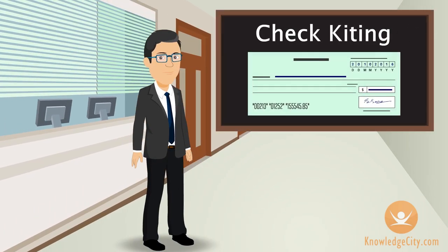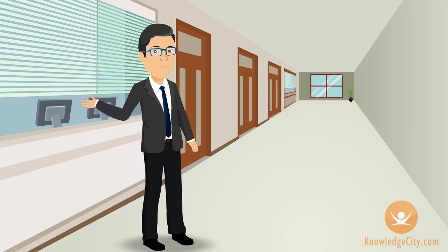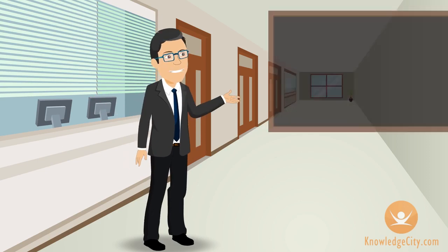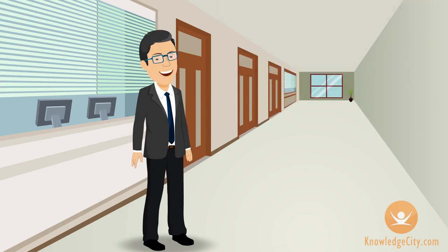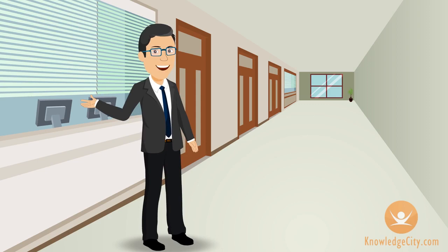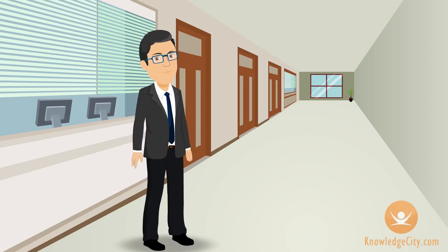Check-kiting. To do this, a criminal makes a series of deposits and withdrawals between several banks. By taking advantage of the float time between banks, the perpetrator gets an interest-free loan. A person that handles the bill paying function at a corporation would be able to perpetrate this crime.